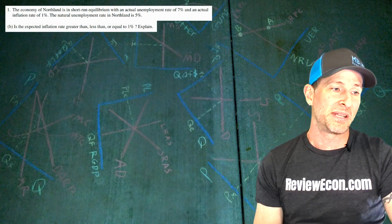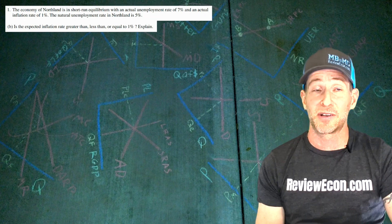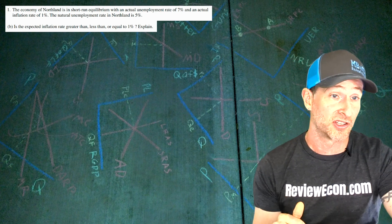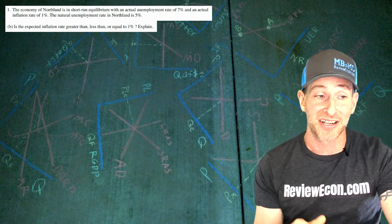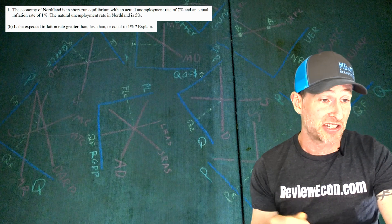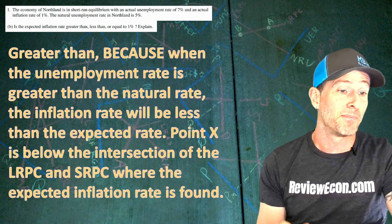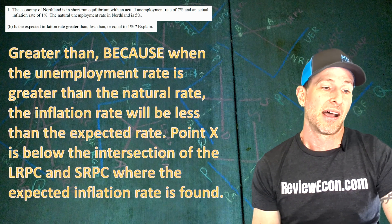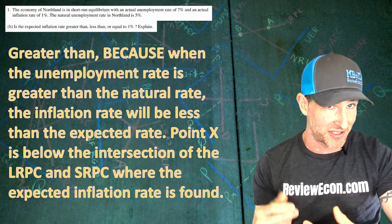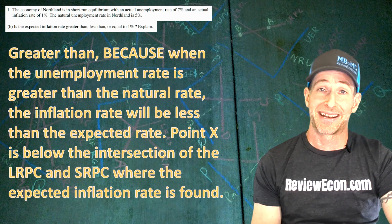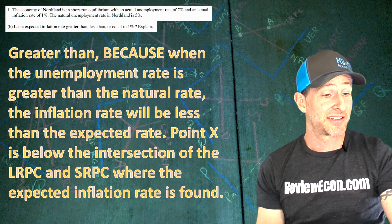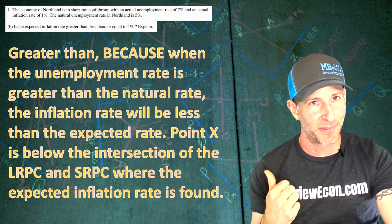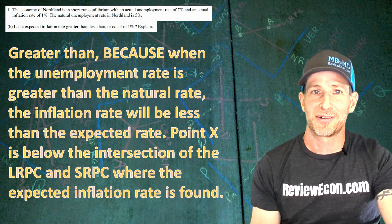Part B: is the expected inflation rate greater than, less than, or equal to 1%? The expected inflation rate is found at the intersection between the long-run and short-run Phillips curves. Since we are below that intersection, the expected inflation rate is greater than 1%. When the unemployment rate is greater than the natural rate, the inflation rate will be less than the expected inflation rate. Point X is below the intersection of the LRPC and the SRPC, and that is where the expected inflation rate is found.